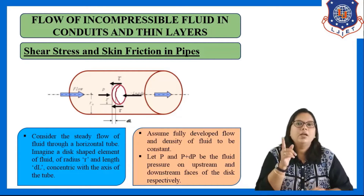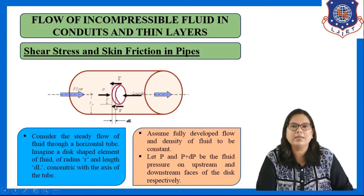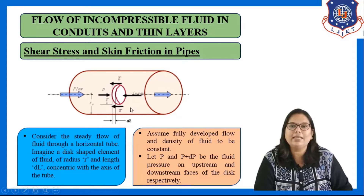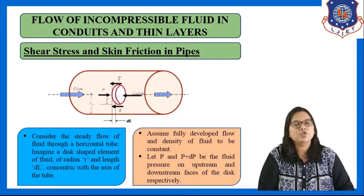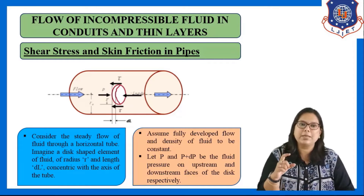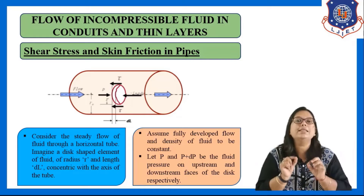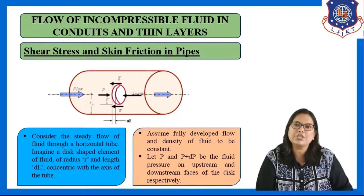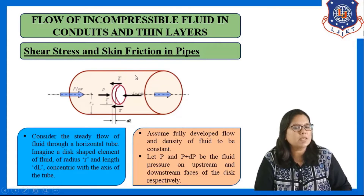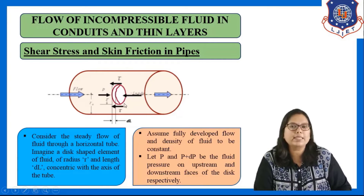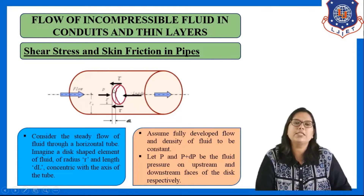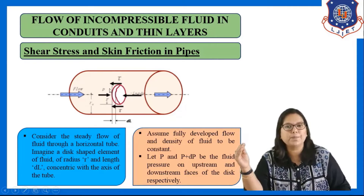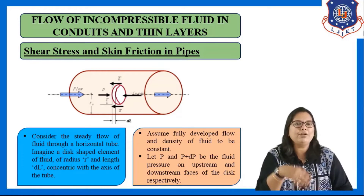Now let us derive the equation. The shear stress acting at the two faces of the disc-shaped element is τ. The notation for the system: disc element radius is R, whole tube radius is Rw, shear stress on the disc element surface is τ, shear stress at the tube wall is τw, length of the disc element is dl, and pressures at upstream and downstream faces are P and P plus dP respectively.